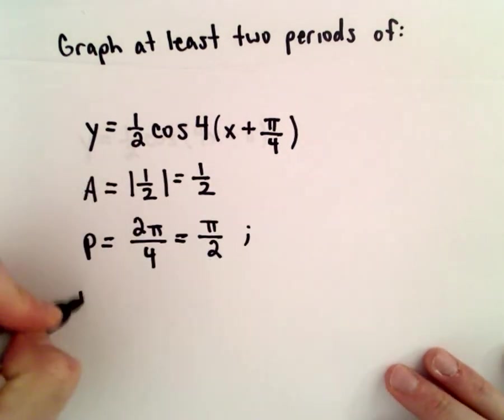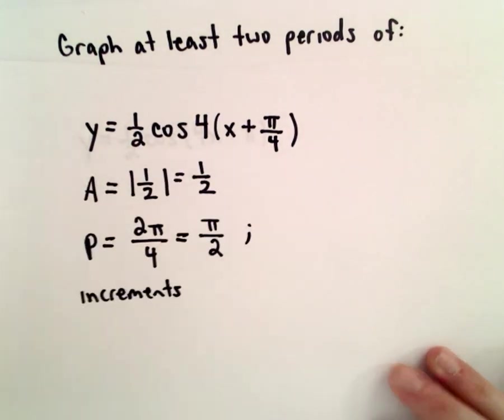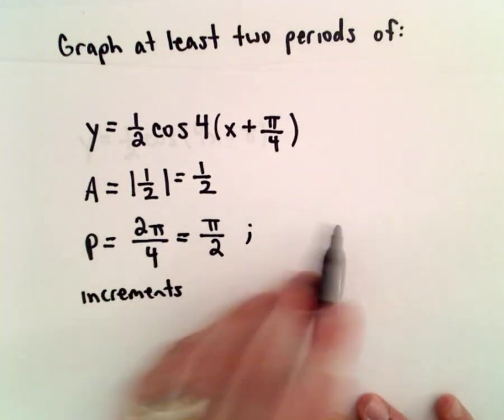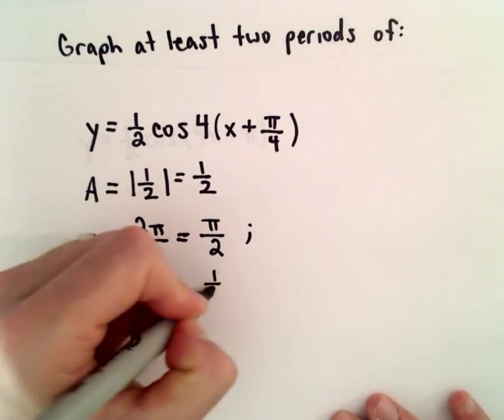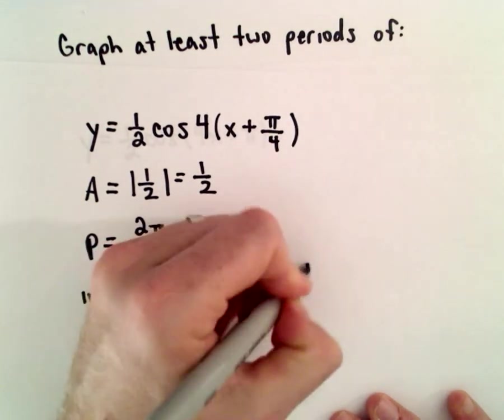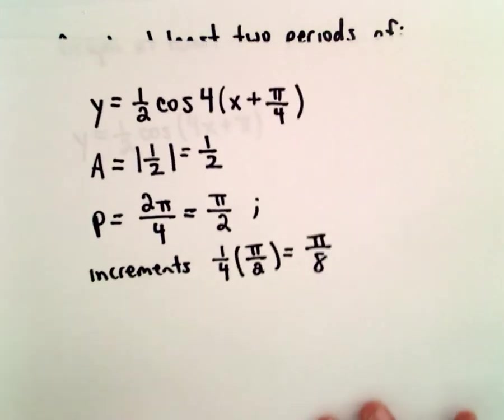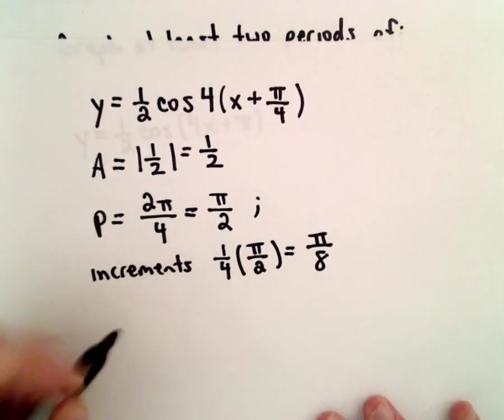Again, to get the increments, or the values I use to sort of get to my next point, I take one-fourth of whatever the period is, and that will give us pi over 8 for this particular function.